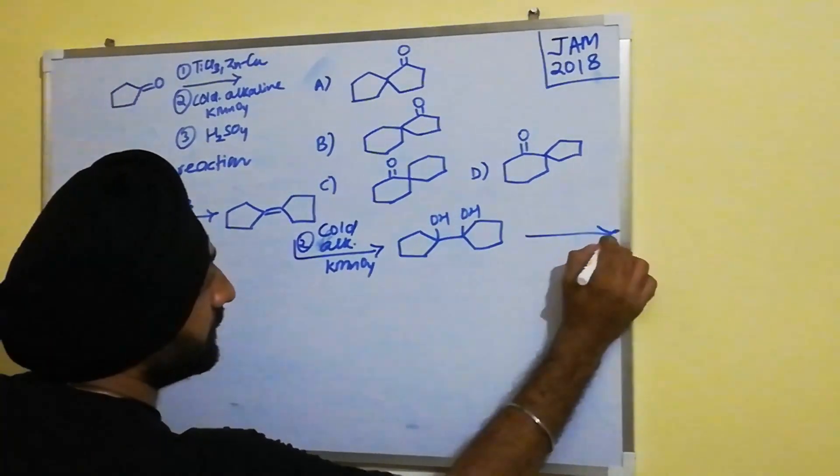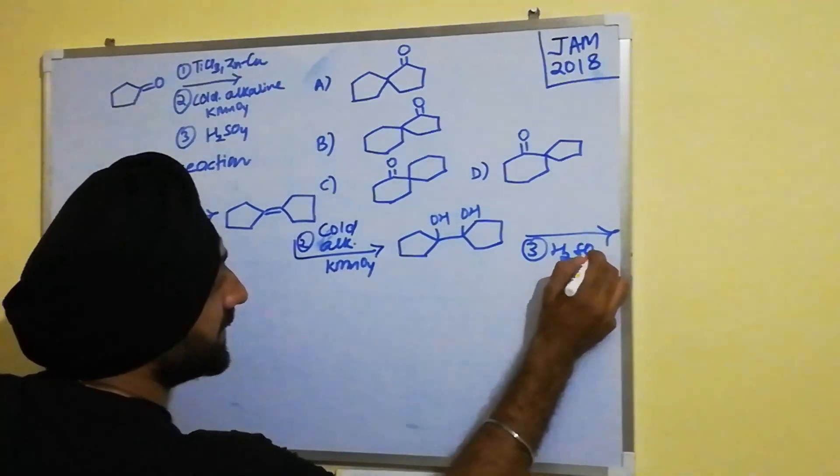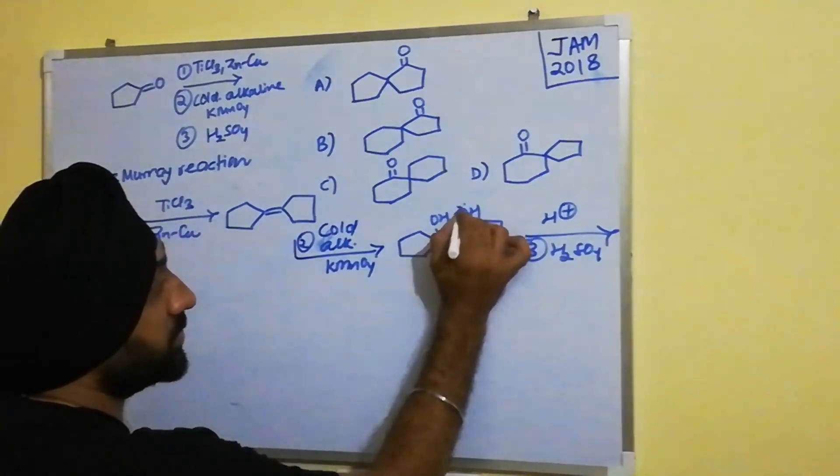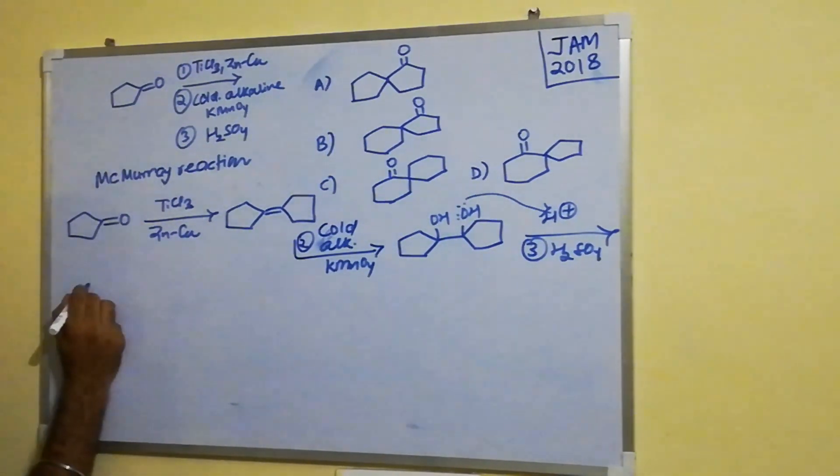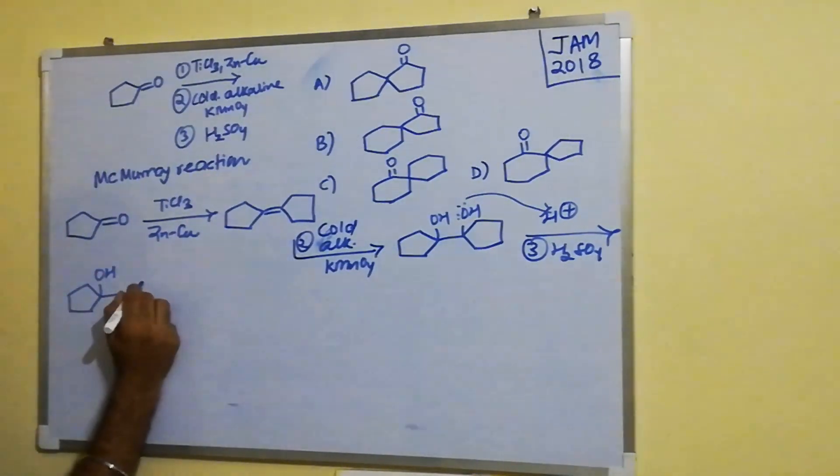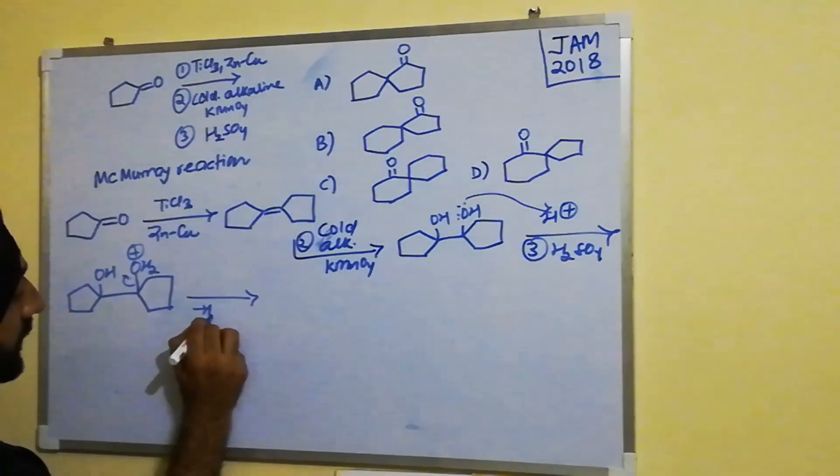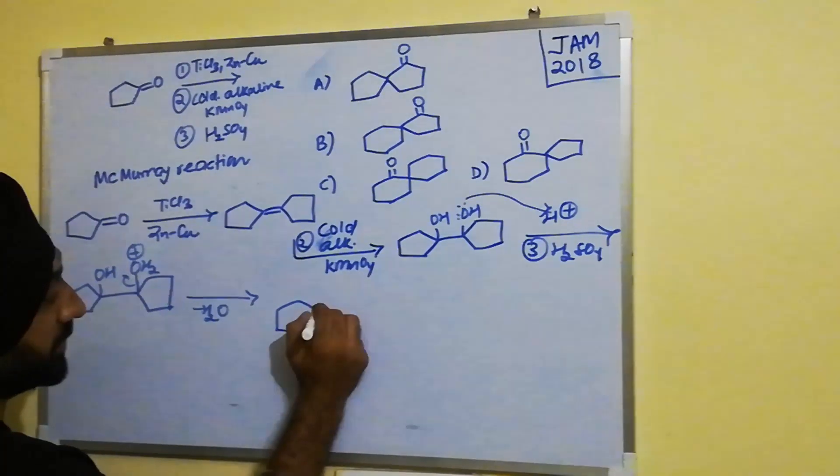In the third step we are adding H2SO4, which is nothing but a source of H+ ion. So any of these OH groups can attack. What it does is it leads to the formation of this intermediate OH2+ ion, and then the water is removed from the reaction which leads to the formation of this particular carbocation.